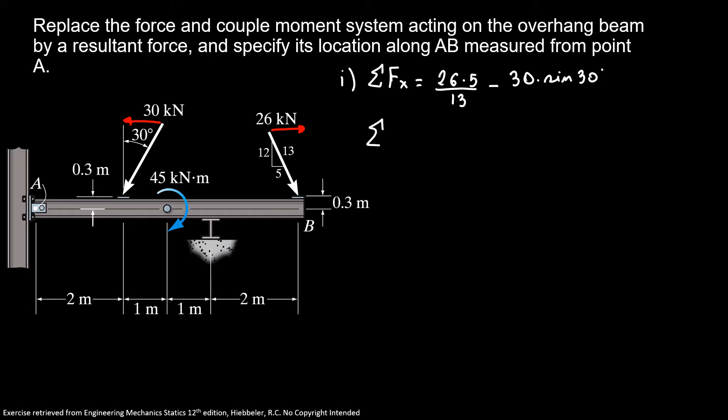So the sum of forces in X direction equals 10 minus 15. So our sum of forces in X direction is minus 5 kilonewtons.